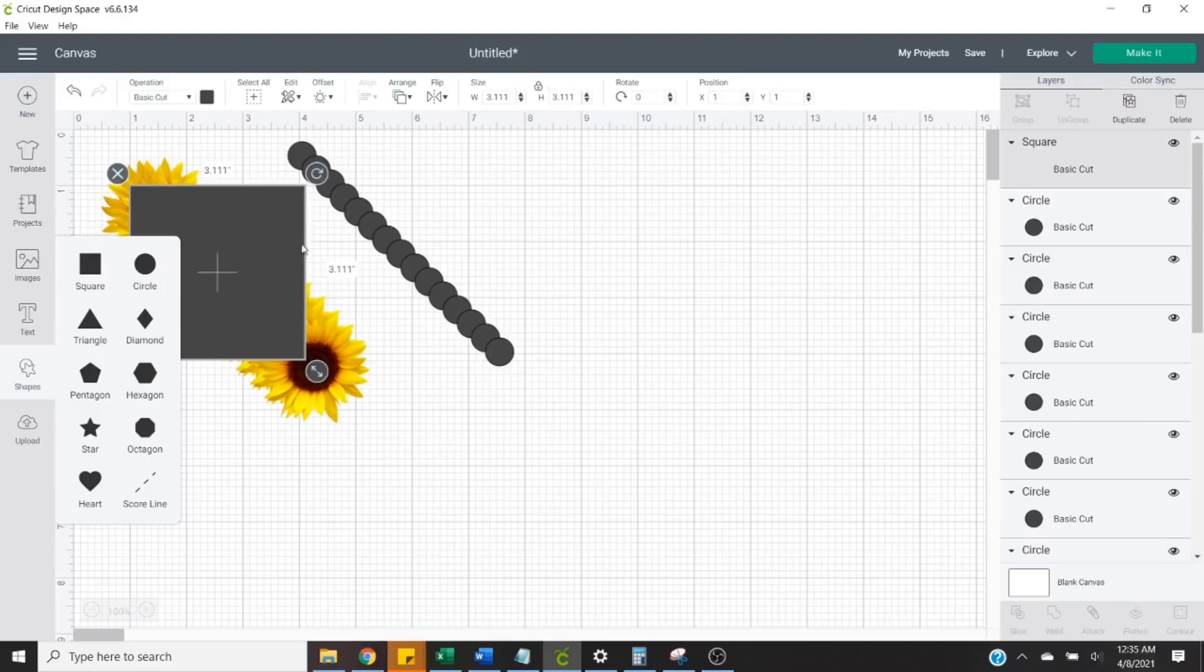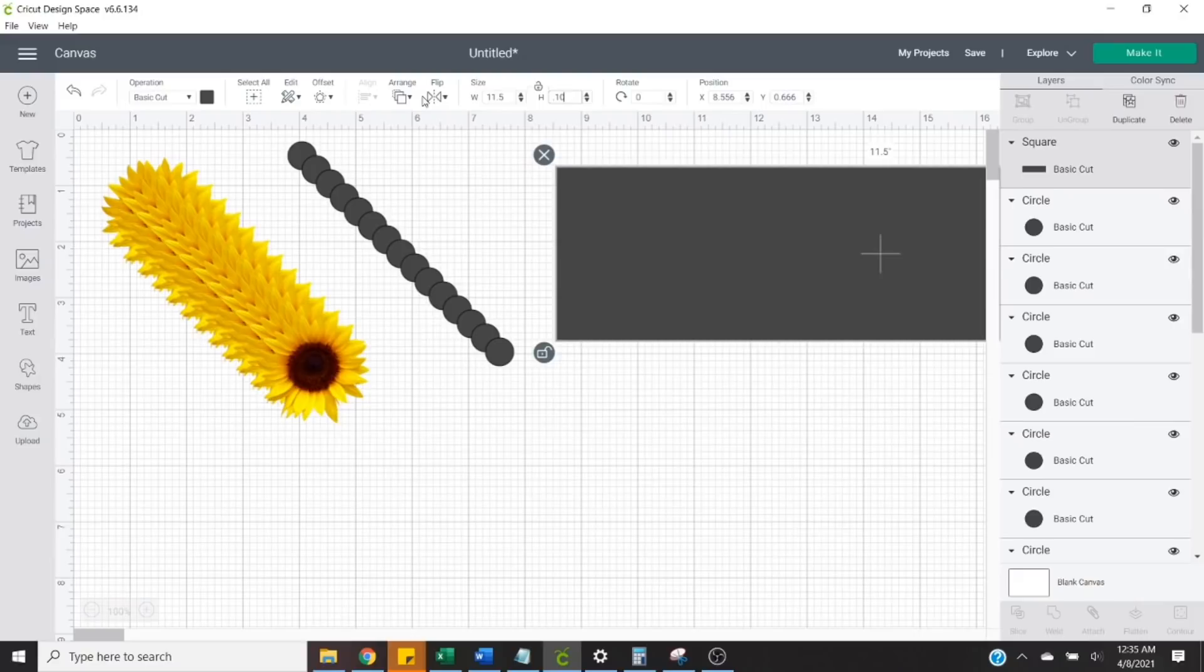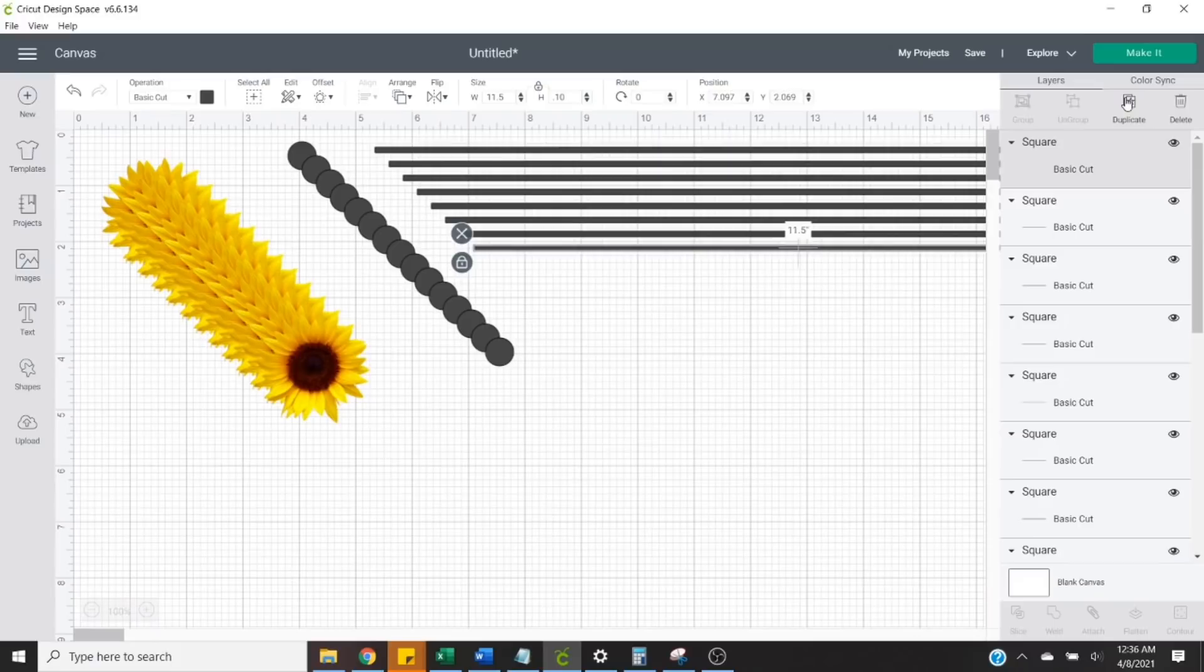For this design, I resized the square to be 11.5 inches wide by 0.10 inches tall. Then I duplicated it to create about 12 lines. I didn't use all of them, but it's always better to have a little extra just in case.